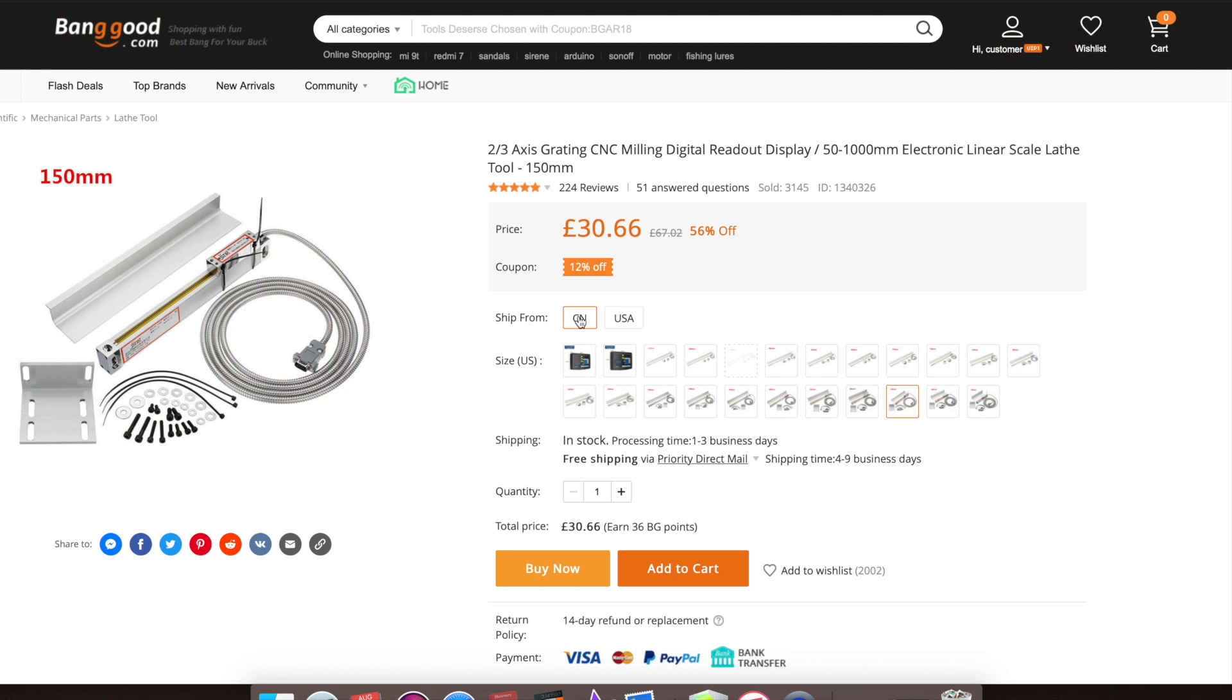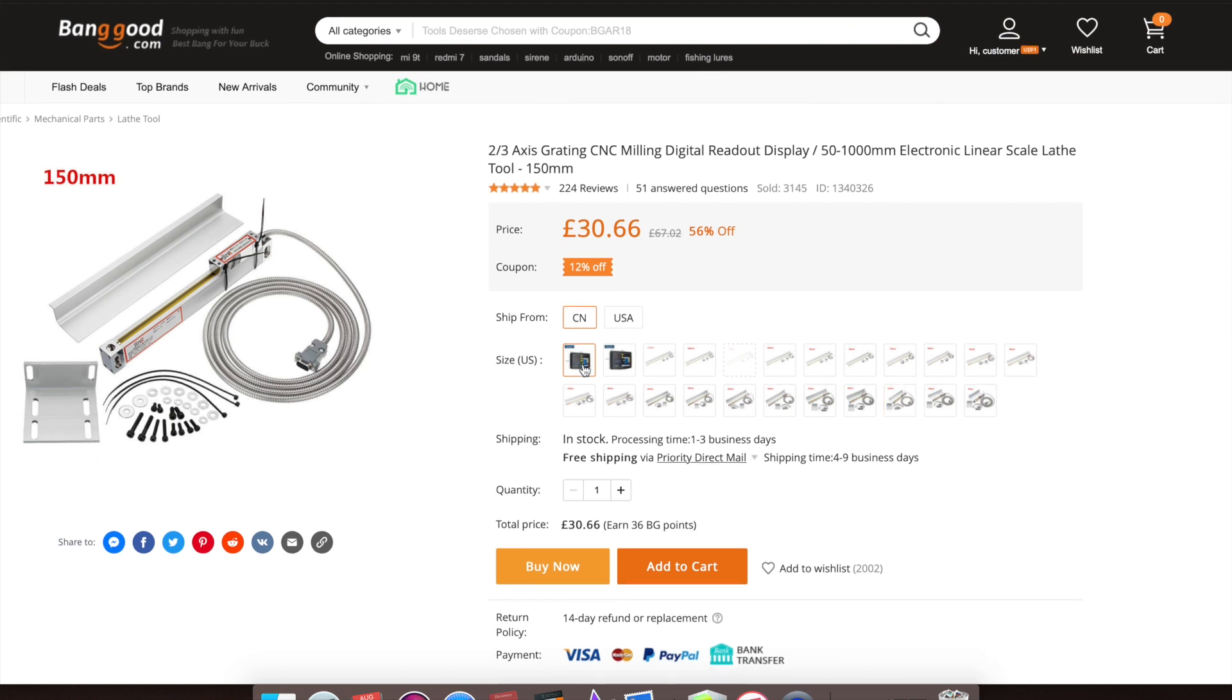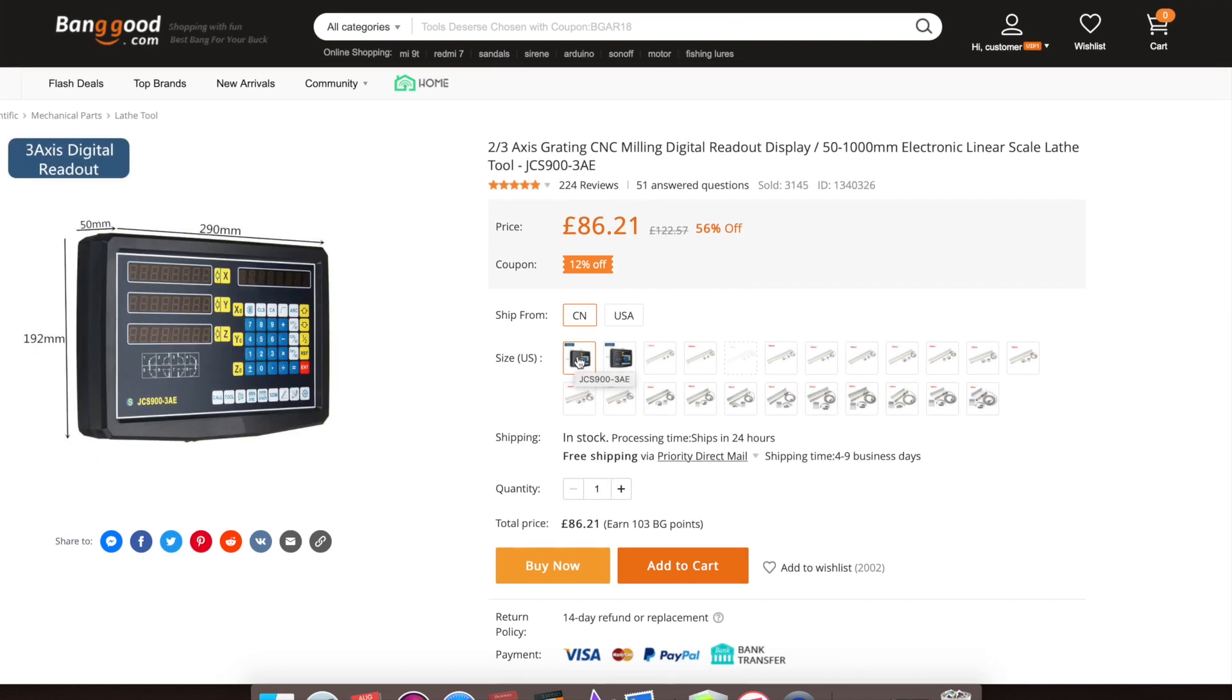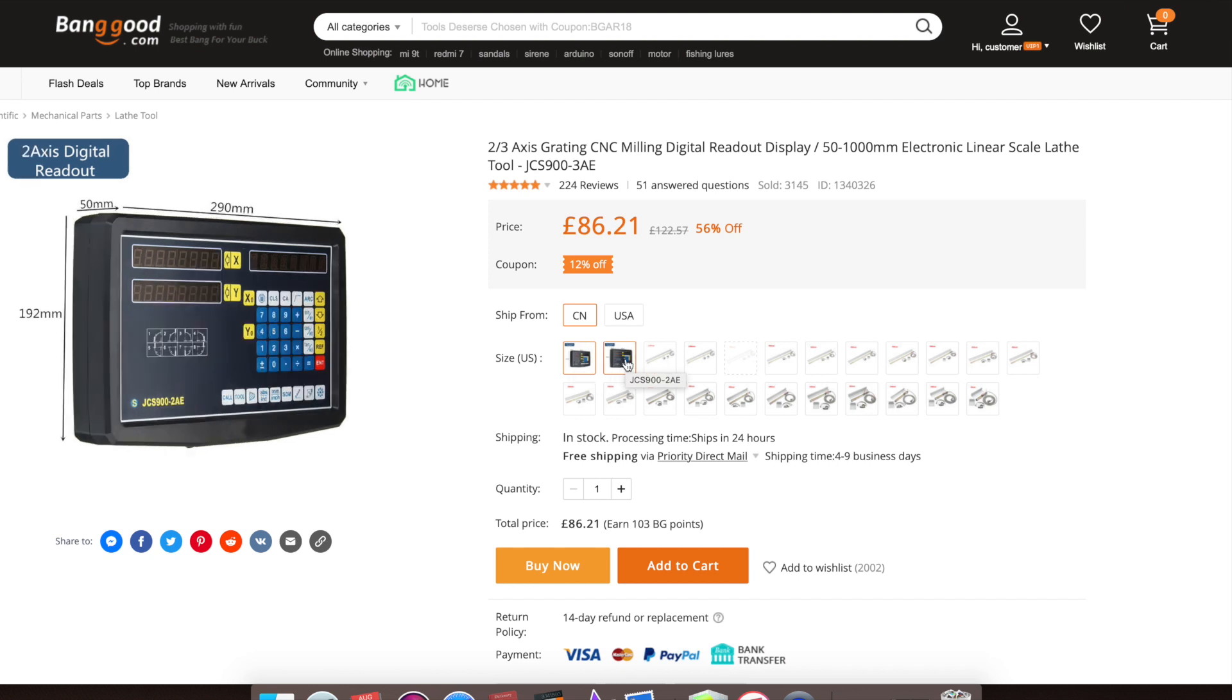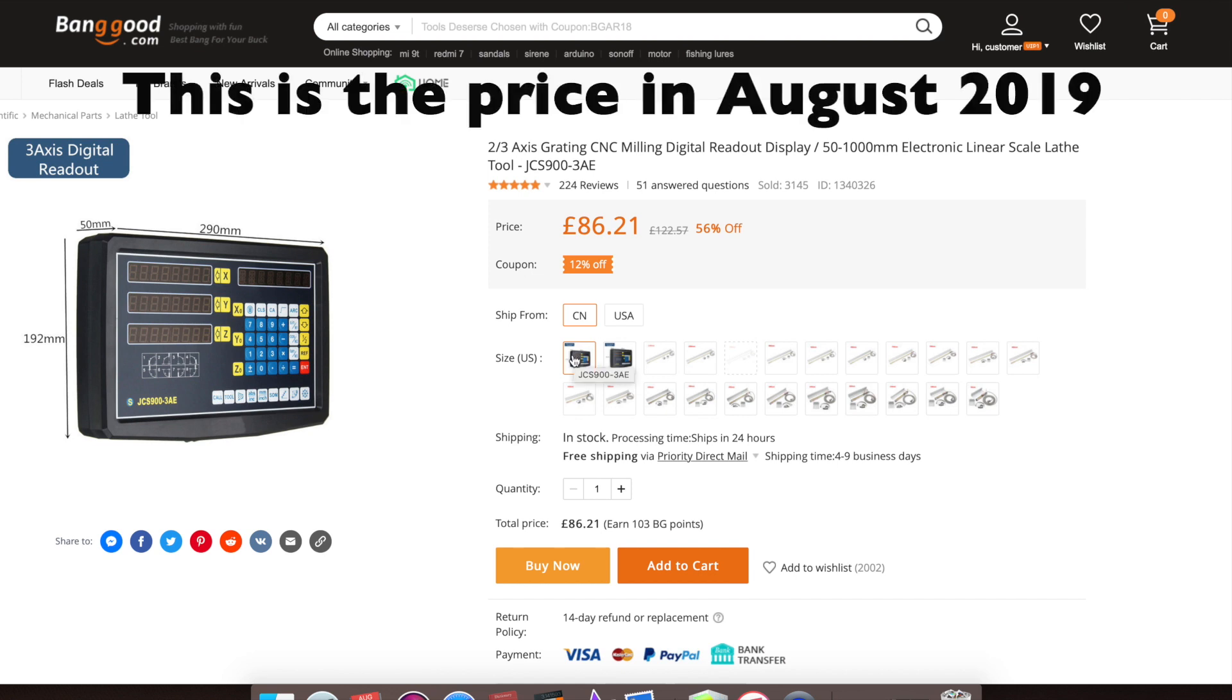So don't assume because it's cheaper from China you're going to get it at a cheaper price. If you're worried about the duty, just buy it off the UK site. So the first thing you need to do is decide which box you need. That's the 3 axis one, and there's the 2 axis one. So the 3 axis one is £86. If that's the one you want, you just press add to cart.